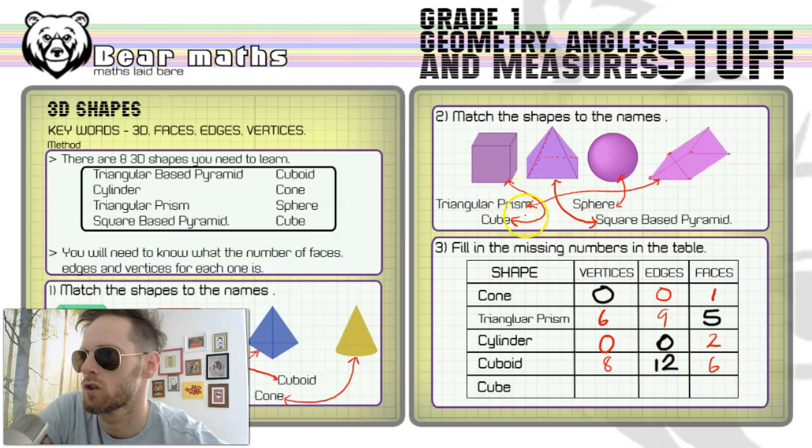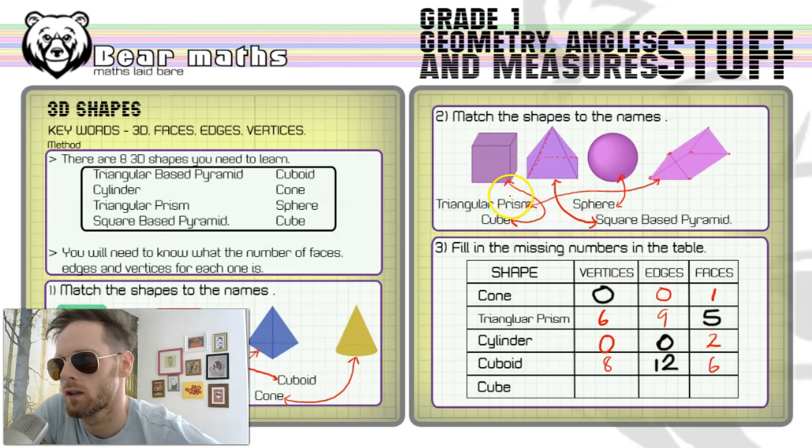The cube is going to be exactly the same as a cuboid. A cube is effectively a cuboid, but it's got a special property in that all the lengths are the same, like I mentioned earlier. So one, two, three, four, five, six, seven, eight vertices, twelve edges, and six faces.